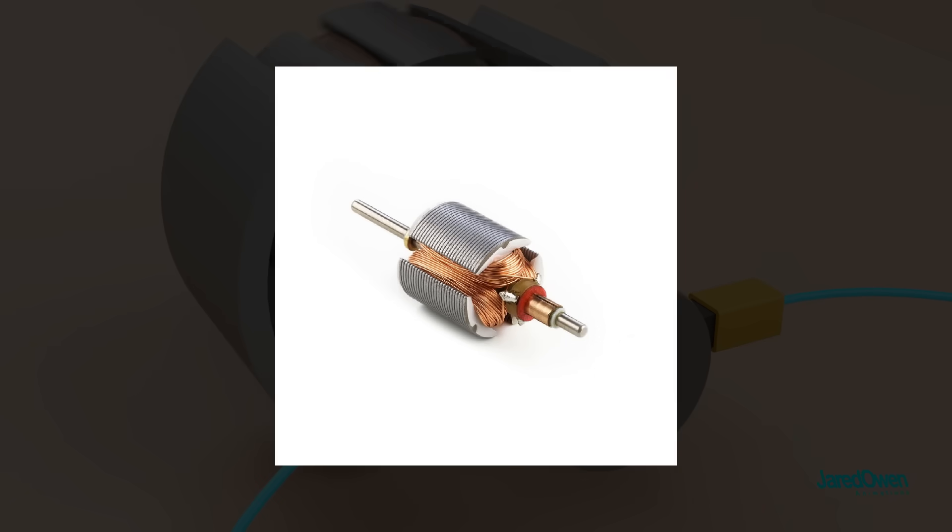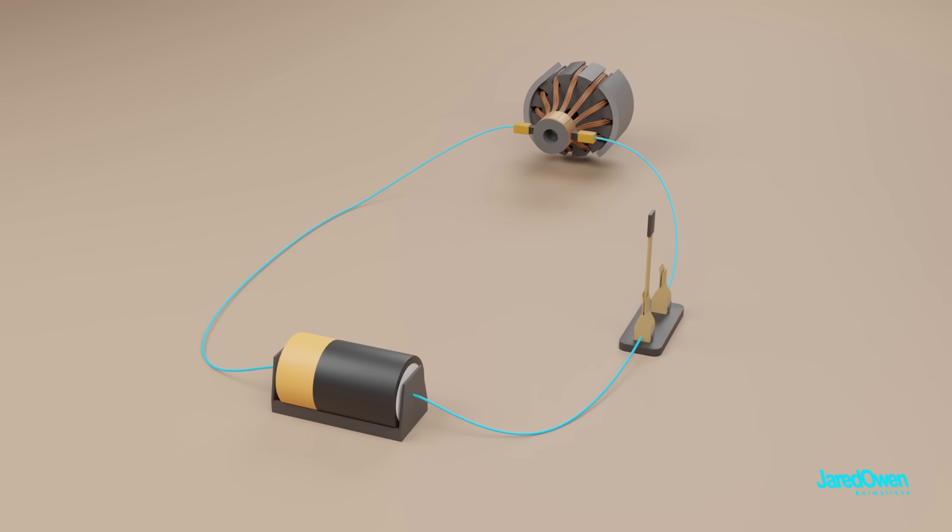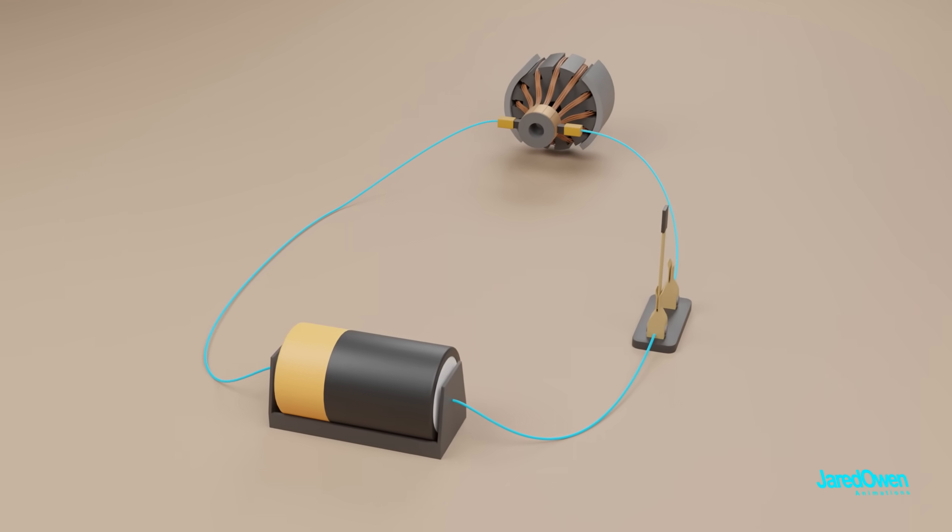If you look at some pictures of real electric motors, you can see lots of wires wrapped around. And yes, this is the same reason. More wires wrapped around means stronger electromagnets. Another way to make this stronger is to use more electricity.